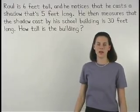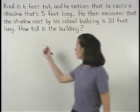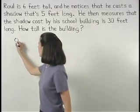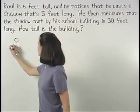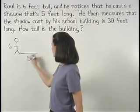In this problem, I would first draw a picture of Raul and his shadow. We know that Raul is six feet tall and he casts a shadow that's five feet long.